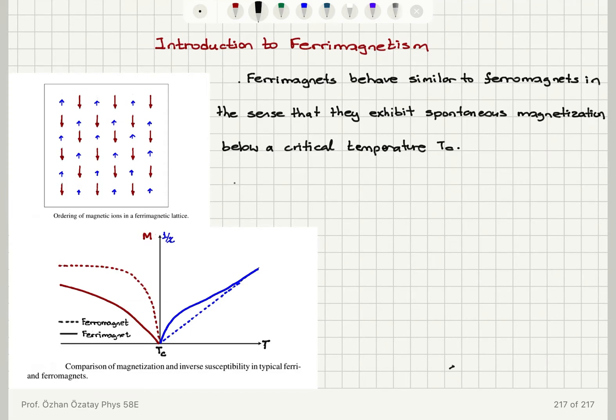And we can think of them as antiferromagnets where the sublattice magnetizations do not exist. They are not exactly canceled. So they can be thought of as antiferromagnets where the sublattice magnetizations do not exactly cancel out.